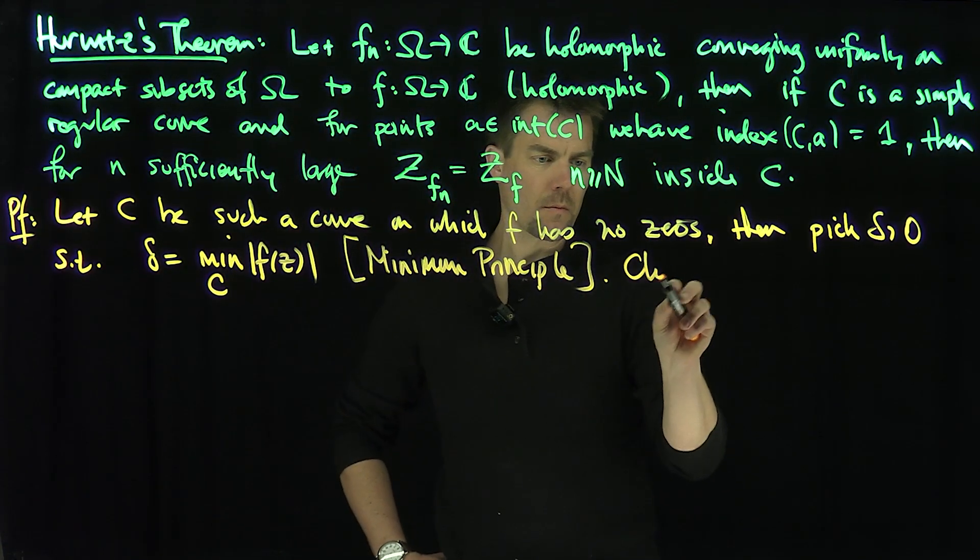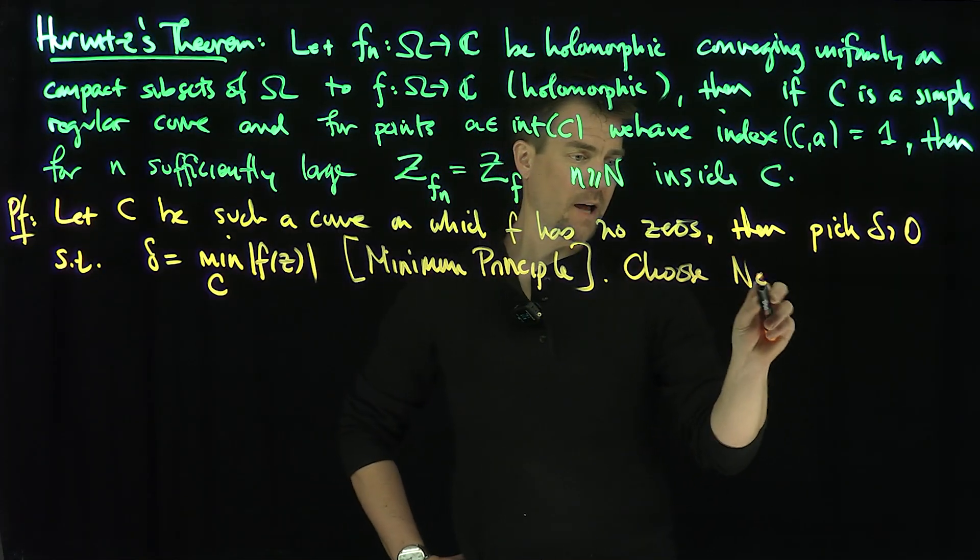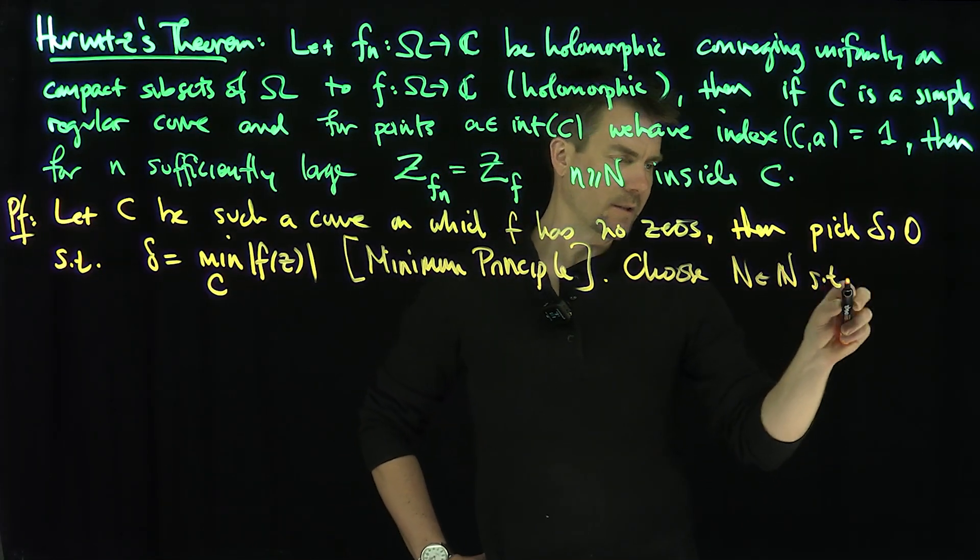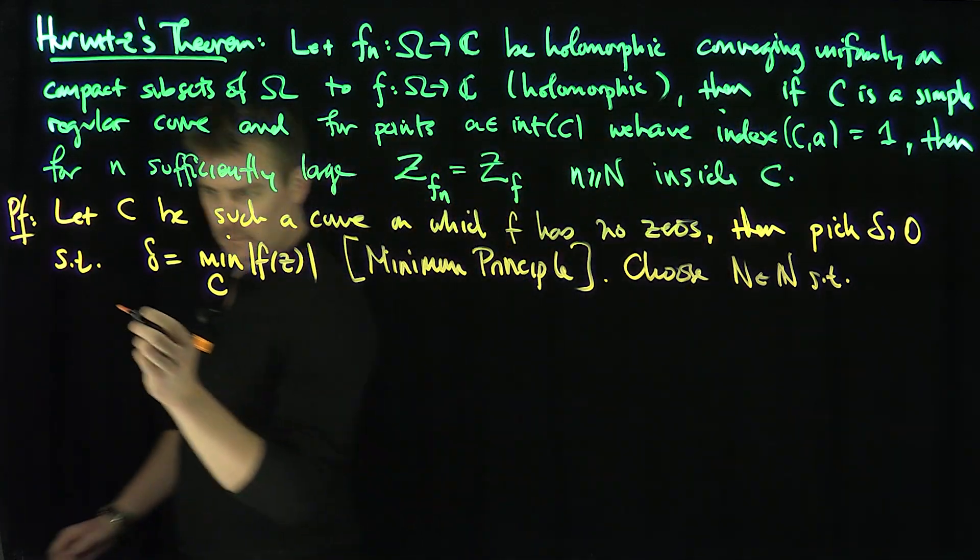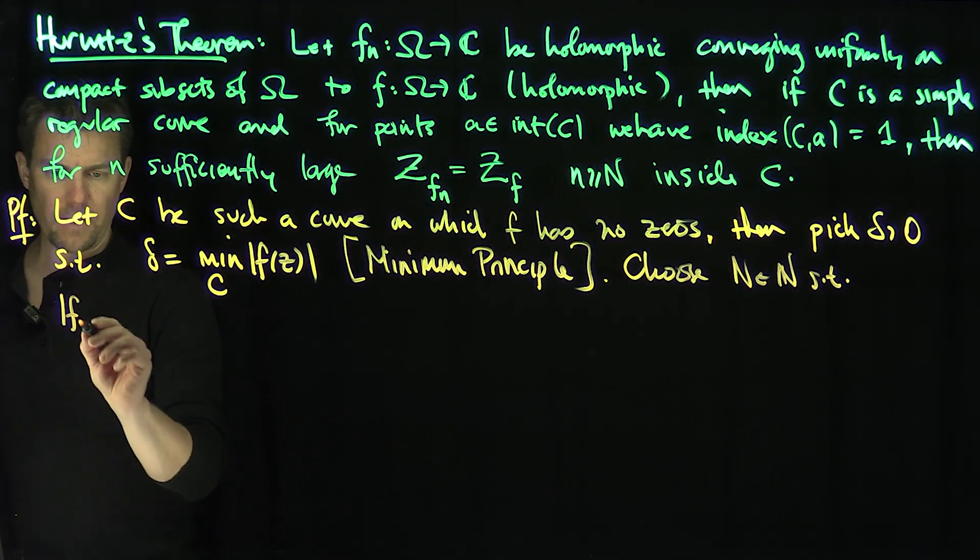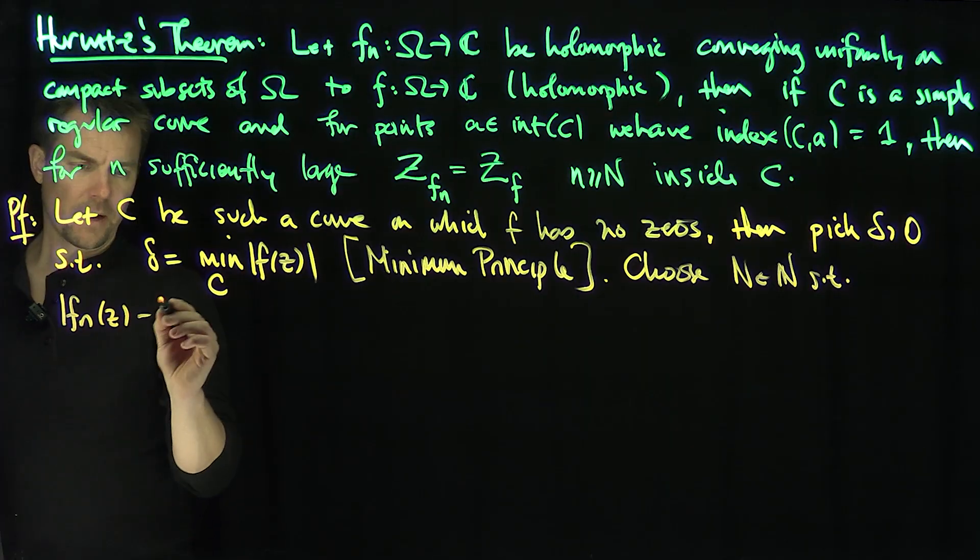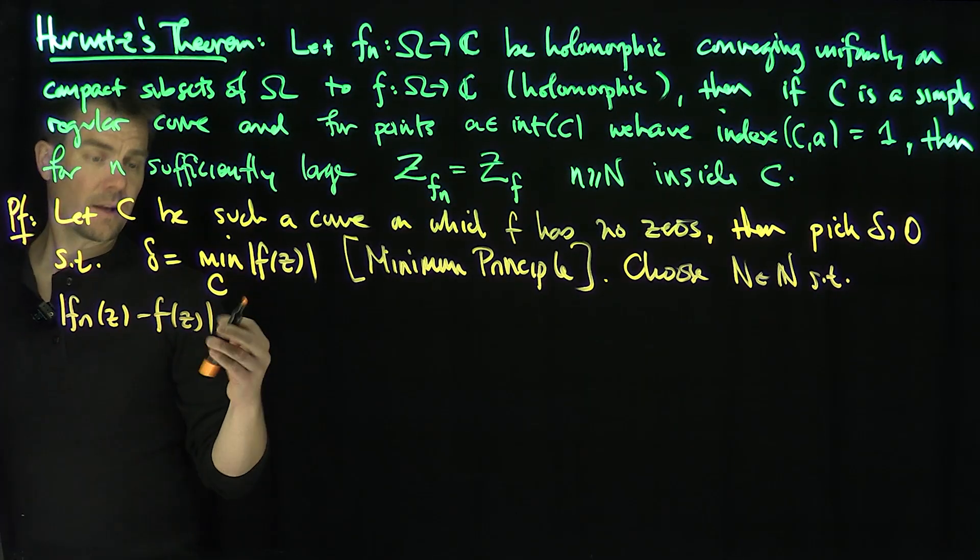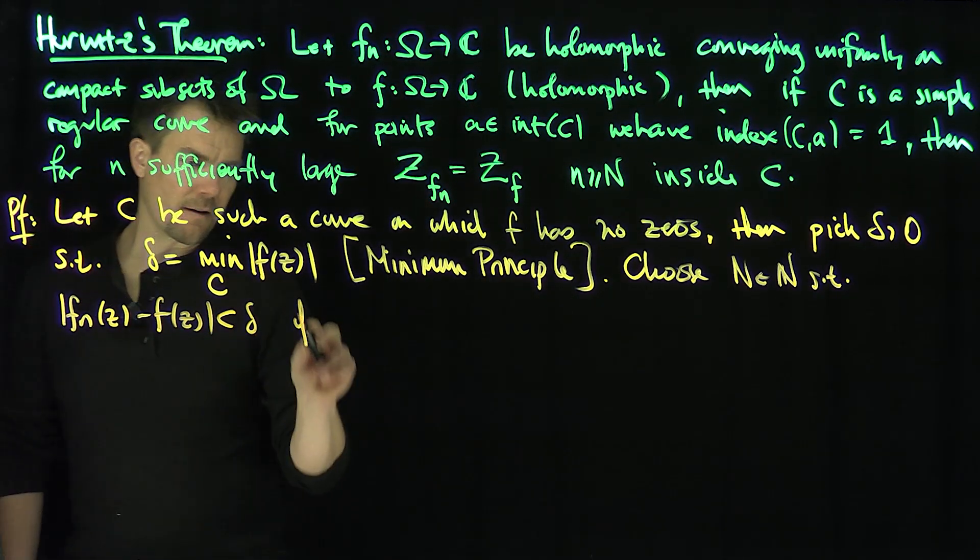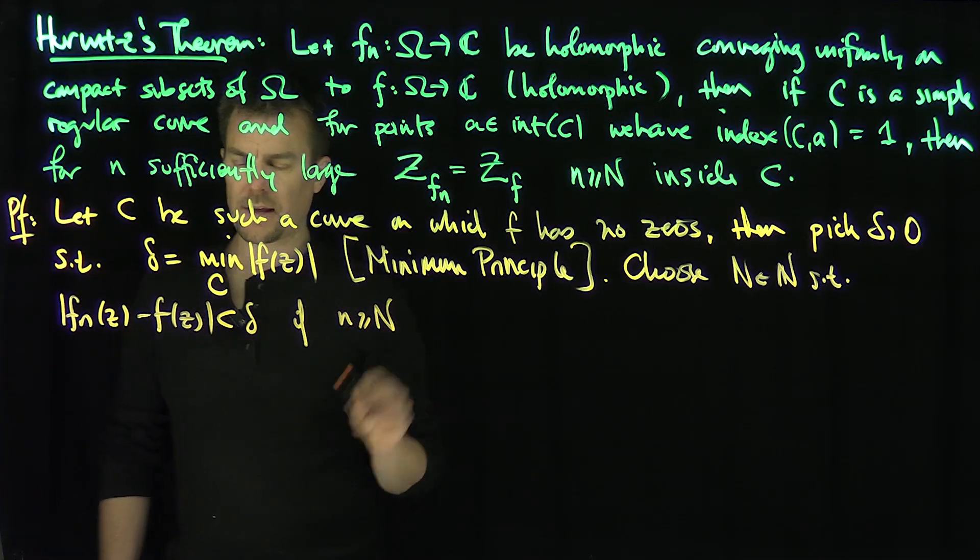choose n capital N such that |fn(z) - f(z)| is less than delta if n is bigger than or equal to N, right?